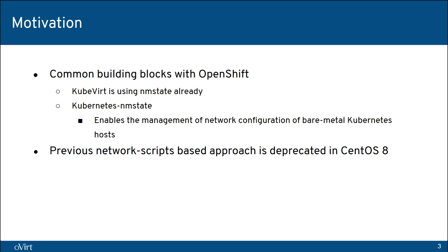The main point why we have moved is to have common building blocks with OpenShift. KubeVirt is using NMState to configure host networking for quite a while. There is a project called Kubernetes NMState which does exactly what you would expect — it allows you to configure bare metal host networking in Kubernetes. Another pretty important point is that from CentOS 8 and further, the usage of network scripts is deprecated, and it is obviously better to be aligned with supported technology.